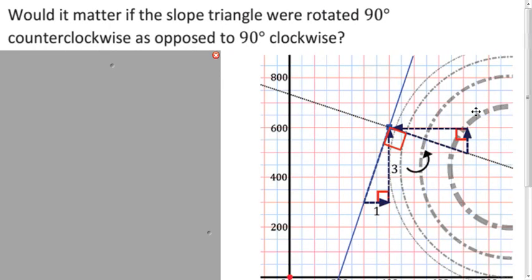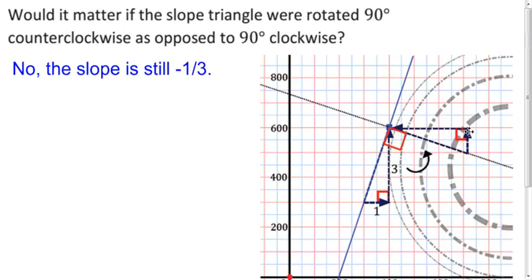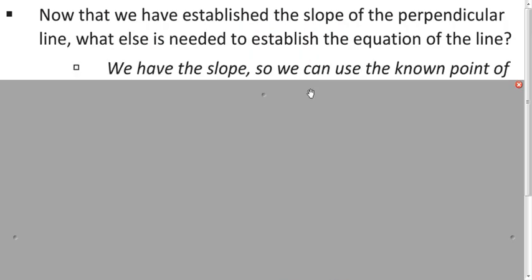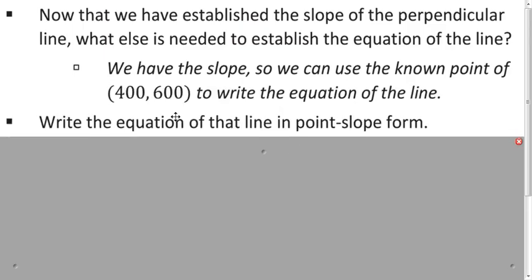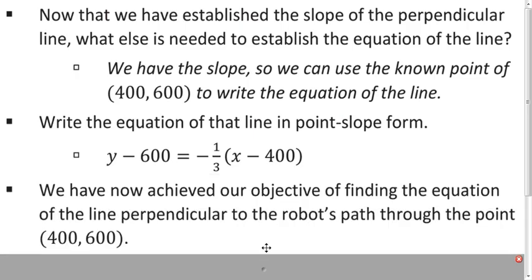Would that slope have changed if we rotated 90 degrees counterclockwise? No — the slope is still negative 1 third. It's falling to the right, change in y is 1, change in x is 3. So how can we figure out the equation of that line? We're going to use point-slope form, and we have that point: (400, 600). In point-slope form, y minus the y-coordinate equals the slope times the quantity x minus the x-coordinate. This models the path that the robot should take to find the homing beacon, and that was our goal.